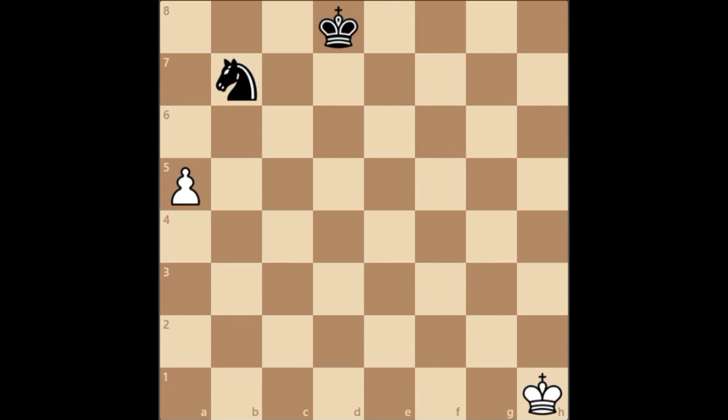In this example, we're going to have a look at endgame number 15 from the book 100 Endgames You Must Know. Here it talks about the knight's dumb square. The author refers to it as knight's dumb square.